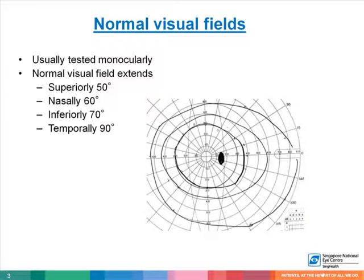The normal visual field is tested monocularly with one eye being occluded, and usually extends superiorly to about 50 degrees, nasally to about 60 degrees, inferiorly 70 degrees, and temporally 90 degrees.